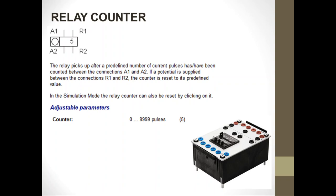If the counter is set to five times, the auxiliary contact will only change its position after the coil of the relay counter has been turned on and off five times. There are still two main components in a relay counter: the coil, represented by A1 and A2 terminals, and the auxiliary contacts.